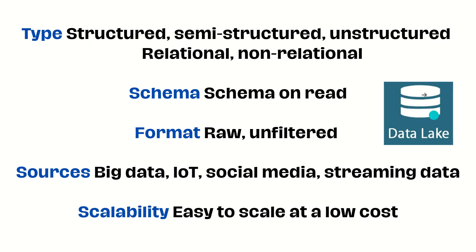Now comparing data lake and data warehouse: for a data lake, the type of data can be anything — structured (spreadsheets), semi-structured (XML, JSON), unstructured (video, images), relational (tables, rows, columns), or non-relational. The schema is schema-on-read — a flexible approach where data is stored in raw form and schema is applied only at the time of data analysis or retrieval. Data can be ingested very quickly without the need for upfront schema design.